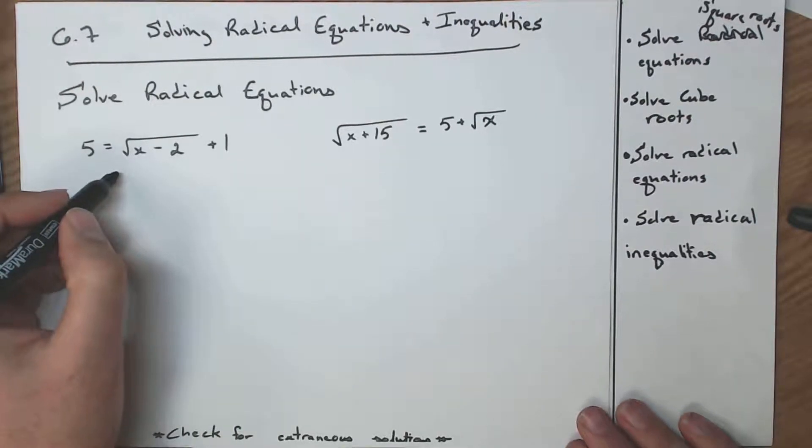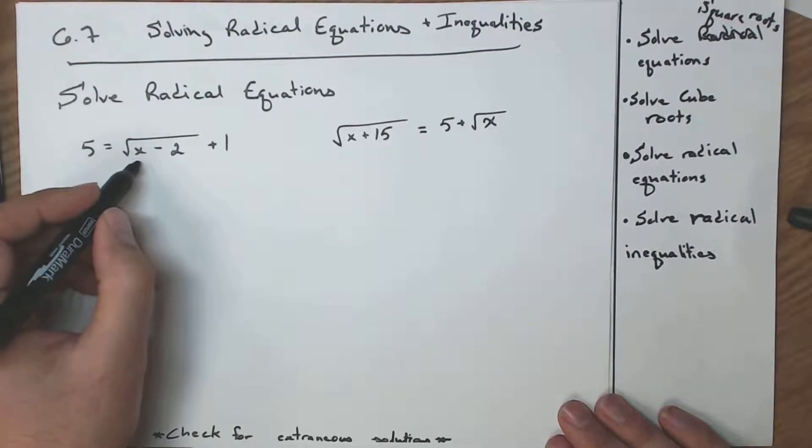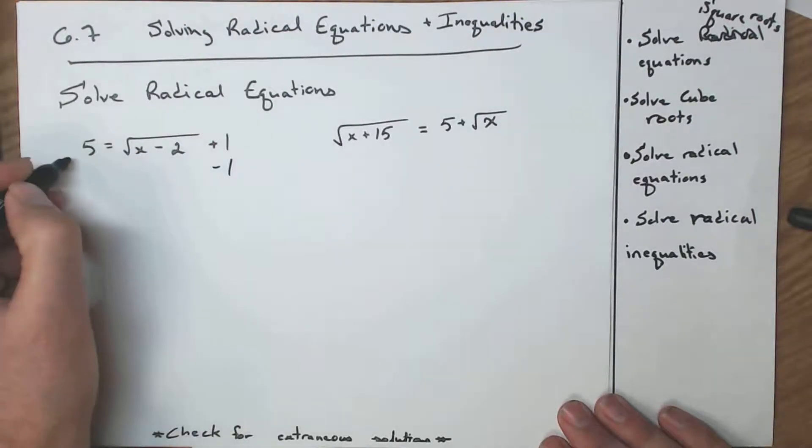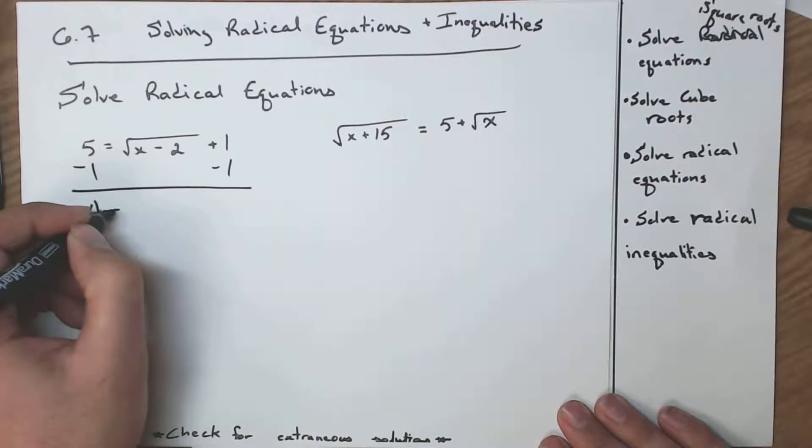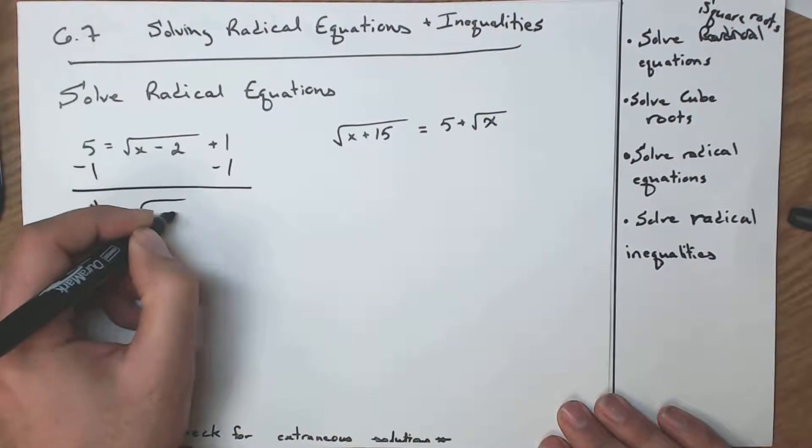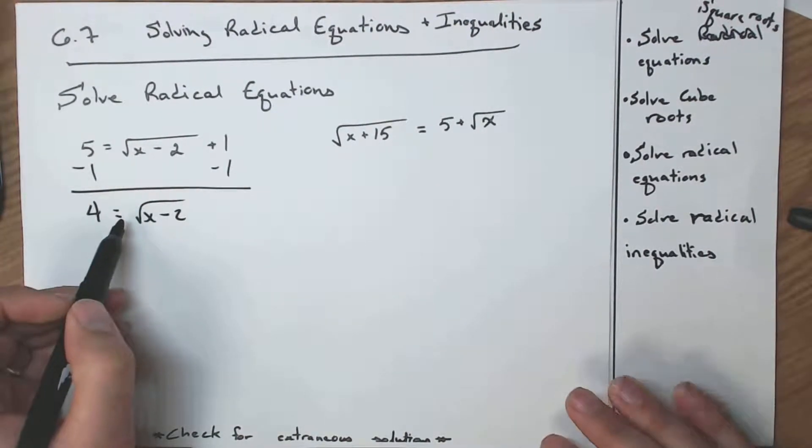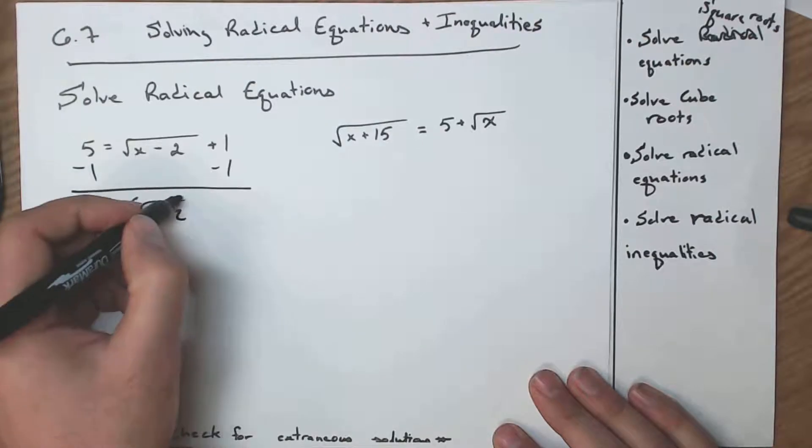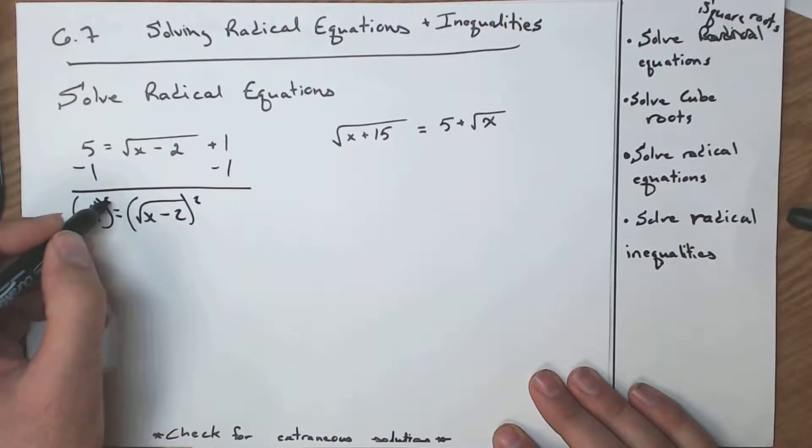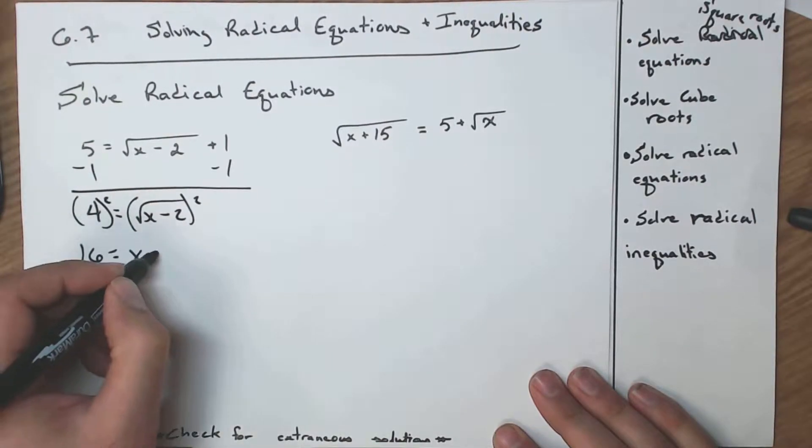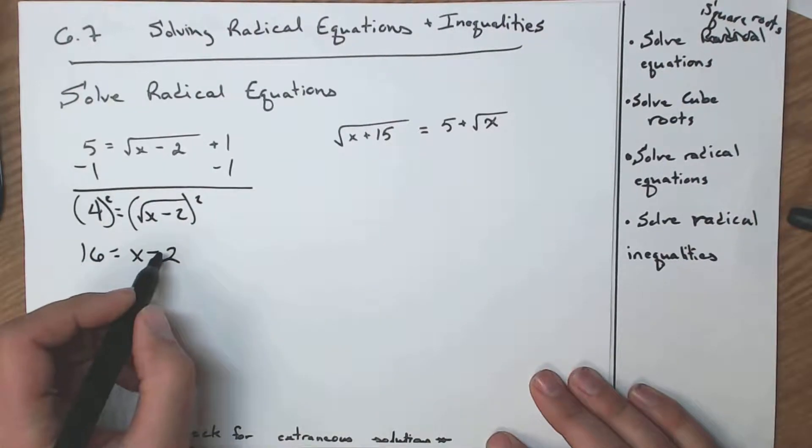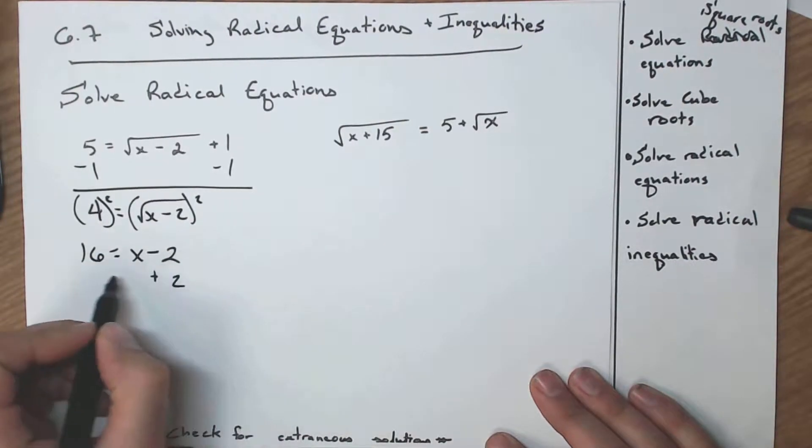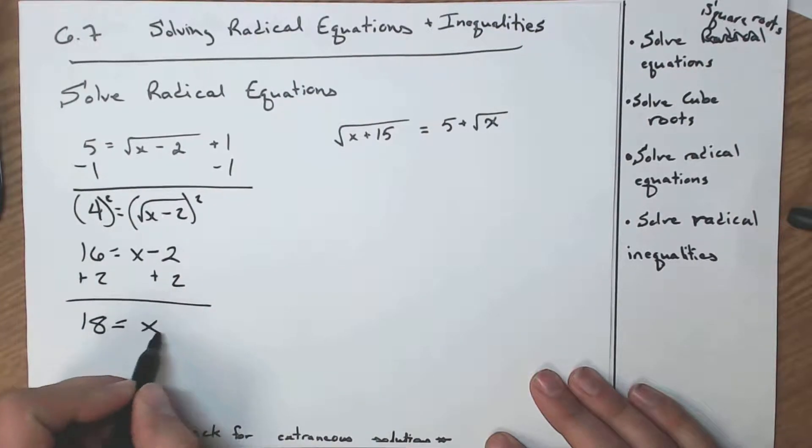First thing is this one over here on the left. Very simple, we only have one square root. We're going to start off by subtracting 1. We're trying to isolate that square root. So we have 4 equals the square root of x minus 2. We now have to get rid of the square root. We do that by squaring both sides of the equation. Whatever we do to one, we have to do to the other. Then I have to add 2. So 18 equals x.